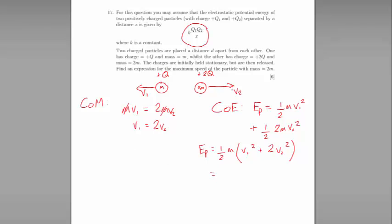Now we can substitute in our value for V1. Remember, we're interested in V2 here, the speed of the mass 2M. So let's get rid of V1 by substituting our earlier equation in. So we get half M multiplied by 2V2 all squared plus 2V2 squared.